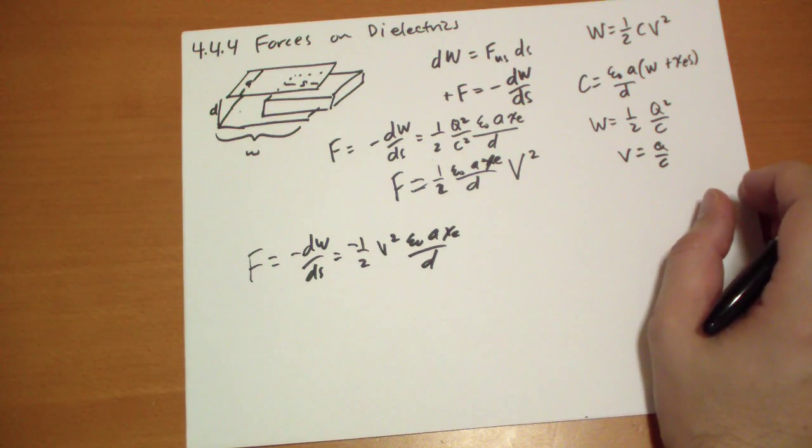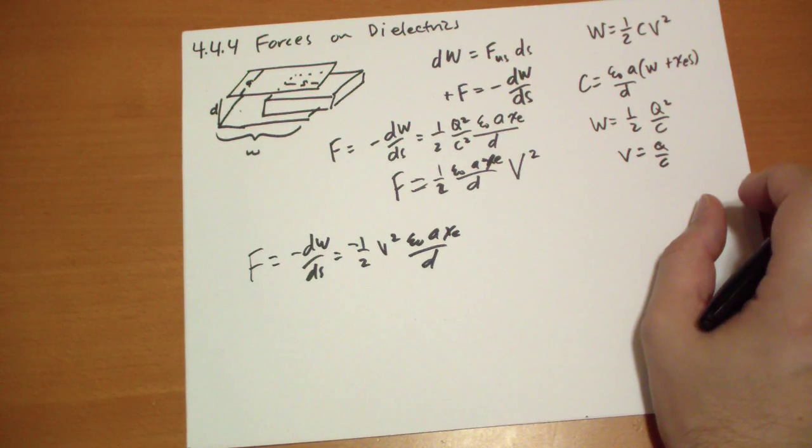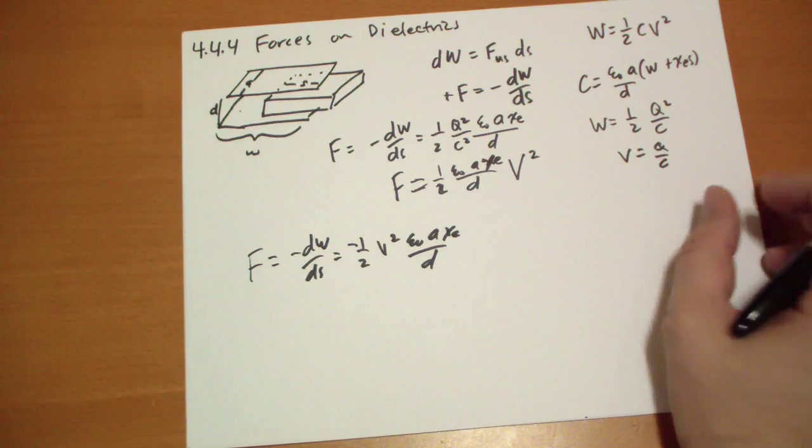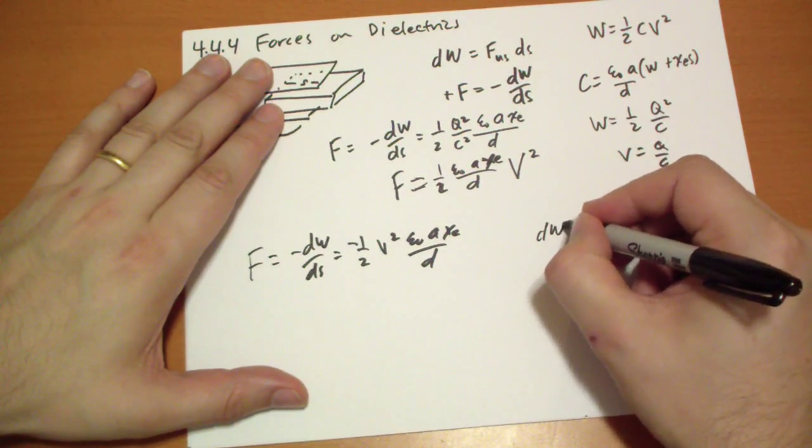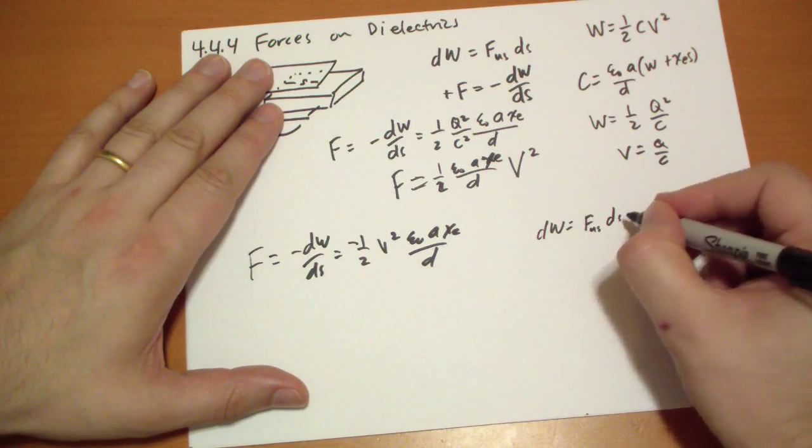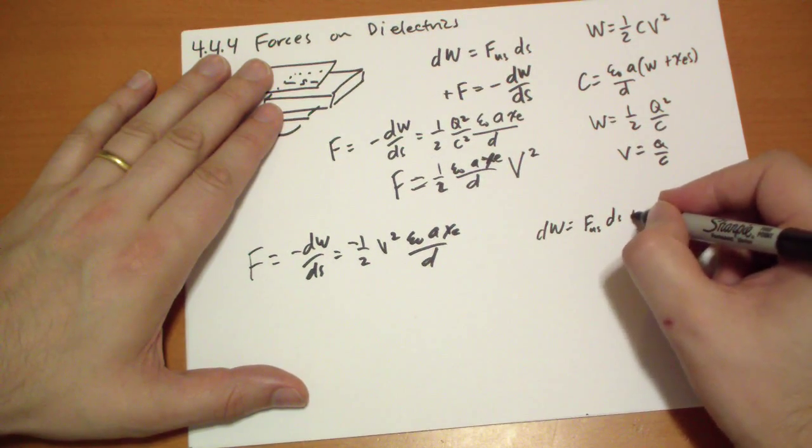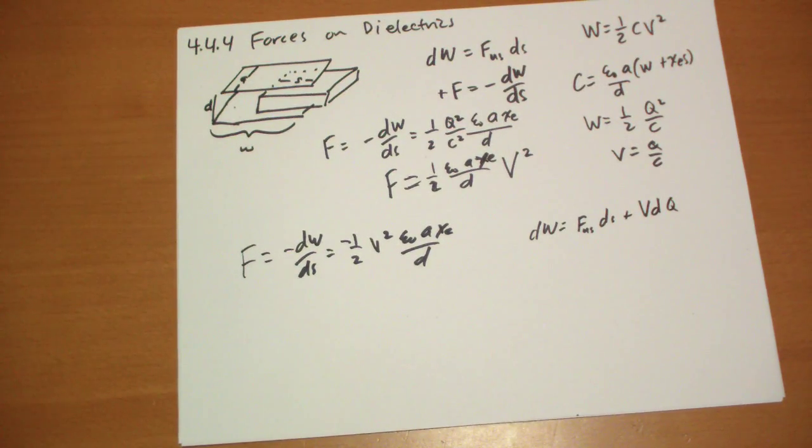And you're like, wait a minute. Hold on a second. Something's wrong here. This is the exact opposite of what it should be. And so you're like, whoa, what happened here? Well, actually what happened is the change in work was equal to the force that we applied to move a distance dS plus the work the battery did to keep the charge constant.